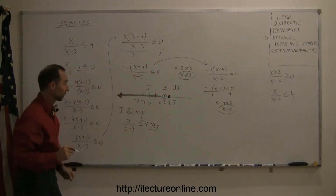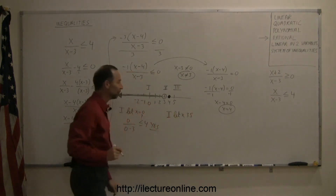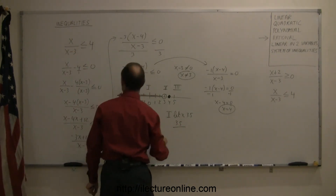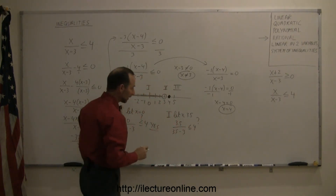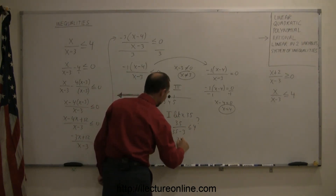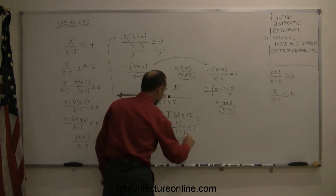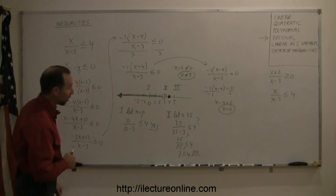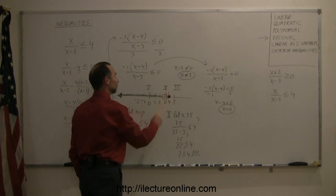For region 2, we let x equal 3.5, halfway between 3 and 4. Plugging into the inequality: 3.5 divided by 3.5 minus 3 — is that less than or equal to 4? That simplifies to 3.5 divided by 0.5, less than or equal to 4. And 3.5 divided by 0.5 is 7. Is 7 less than or equal to 4? The answer is no — 7 is definitely not smaller than 4, which means every point between 3 and 4 is not part of the solution.